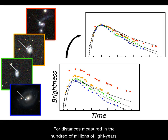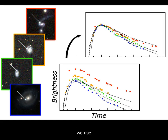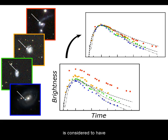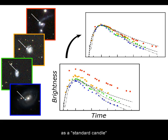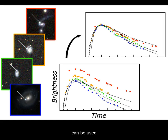For distances measured in the hundreds of millions of light-years, we use different standard candles. Supernova Type 1A is considered to have a predictable peak luminosity and hence can be used as a standard candle, which can once again be used in the inverse square law of light to establish distance.